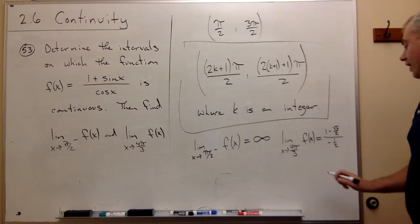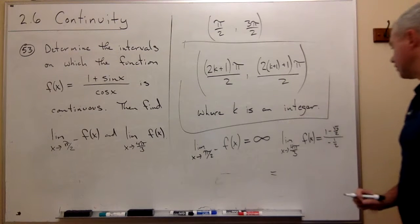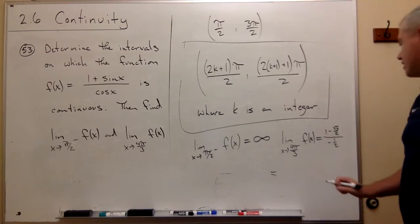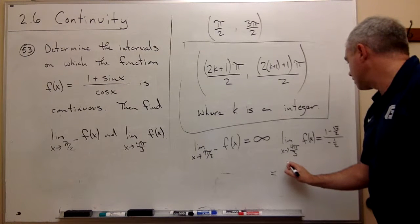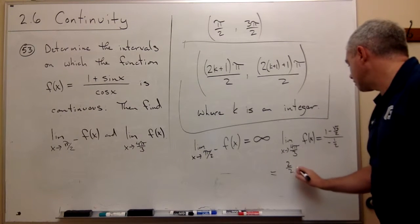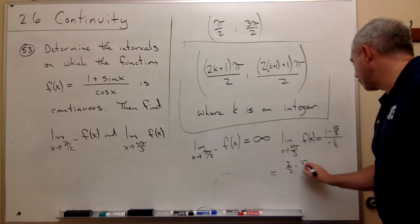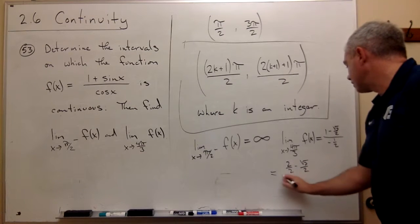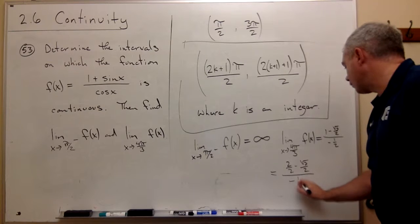And then I can simplify this down a little bit. Let's see what we can do with it. So I could write this as a 2 over 2. So I get 2 over 2 minus square root 3 over 2 divided by negative 1 over 2.